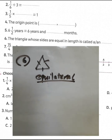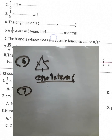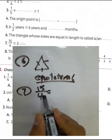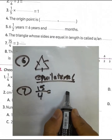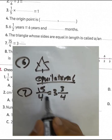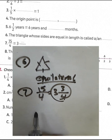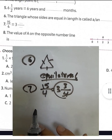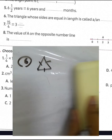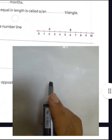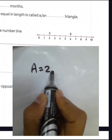Question 7: 15 over 4. We can write 3 divided by 4 equals 12, and 12 plus 3 equals 15. This converts from an improper fraction to a mixed number. Question 8: the value of A on the number line is 2. It's very easy — the value of A is 2.